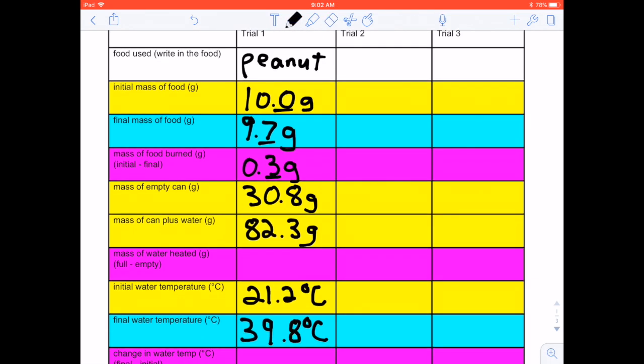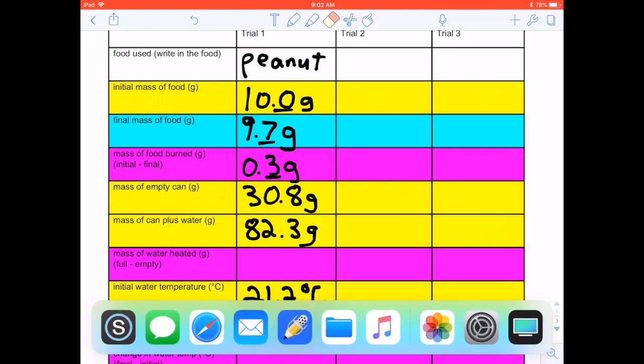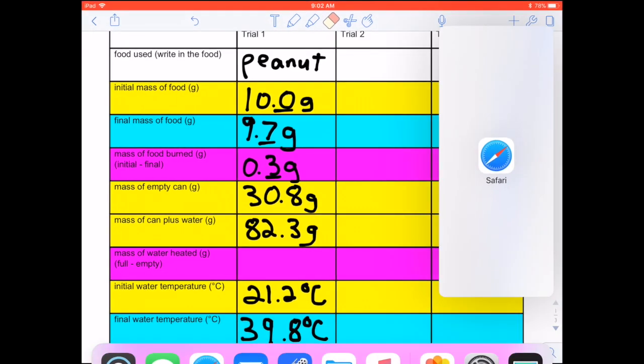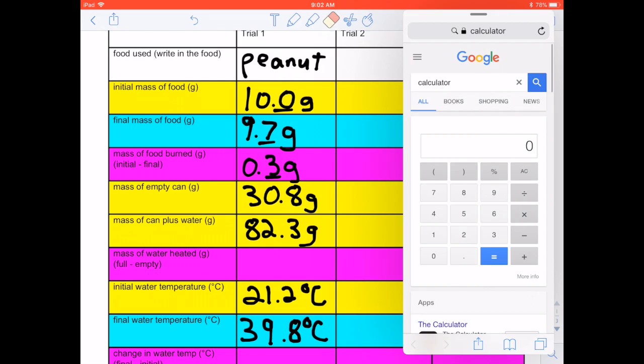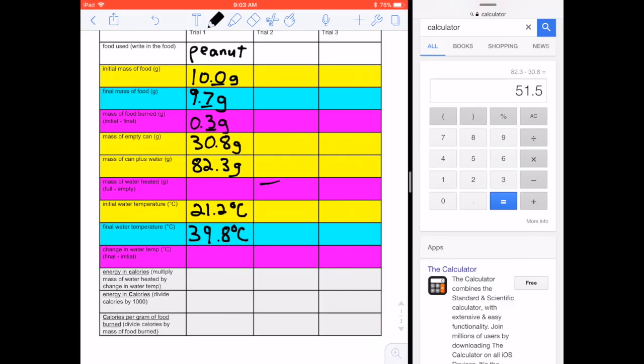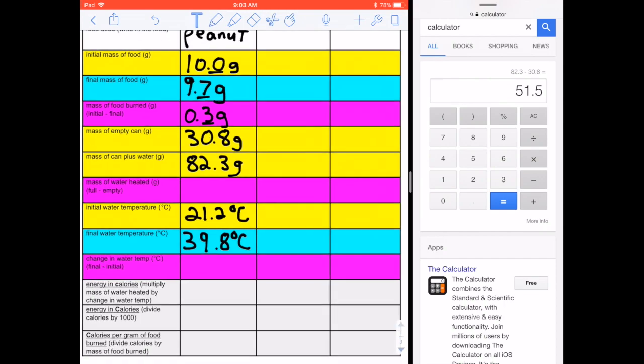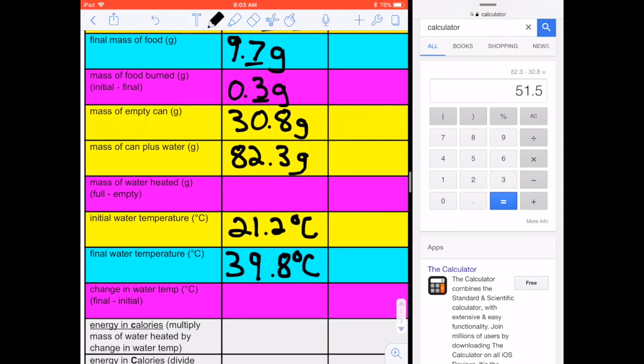What's the mass of the empty can and the mass of the can plus the water? What's the difference? So take full minus empty, so 82.3 minus 30.8. Okay, 51.5 is the mass of the water heated, which makes sense because I added about 50 milliliters.